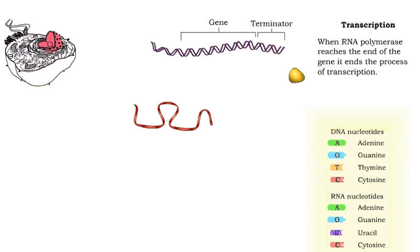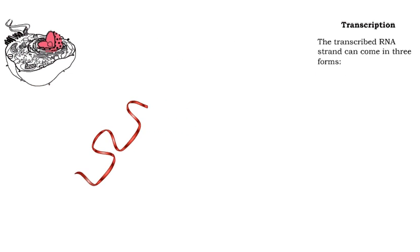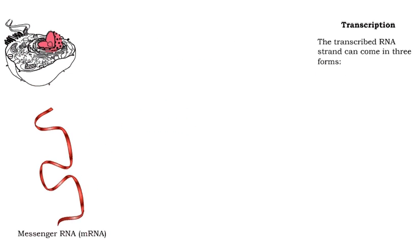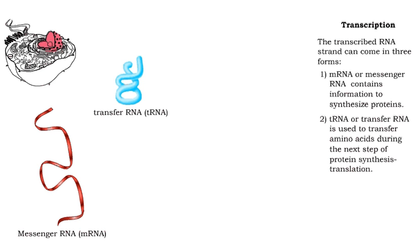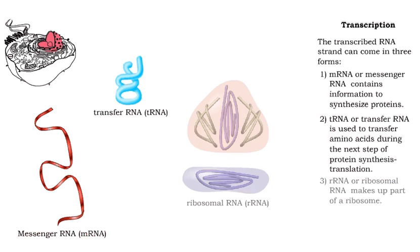The transcribed RNA strand can come in three forms. The first form is mRNA or messenger RNA, and contains information to synthesize proteins. The second form is tRNA or transfer RNA, and is used to transfer amino acids during the next step of protein synthesis, translation. And the third form is rRNA or ribosomal RNA, which makes up part of a ribosome.